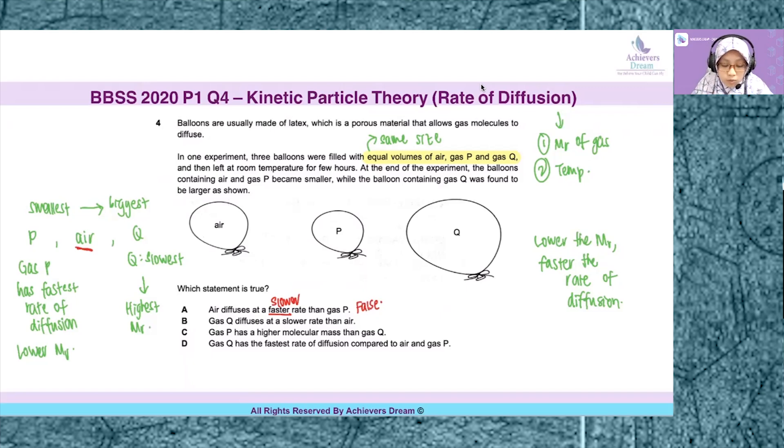Let's skip option B and look at option C. Gas P has a higher molecular mass than gas Q. We have already determined initially that Q has the highest molecular mass. Hence, C is false as well.